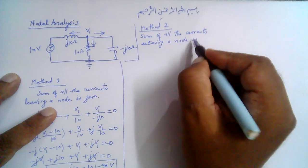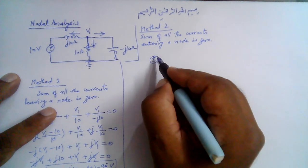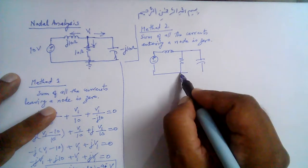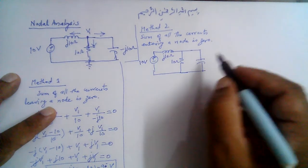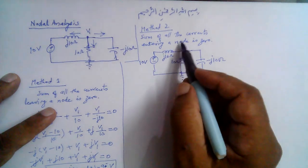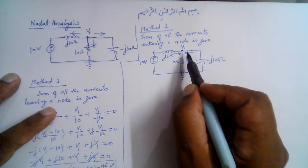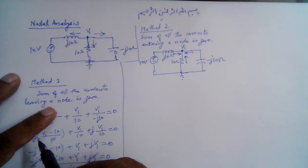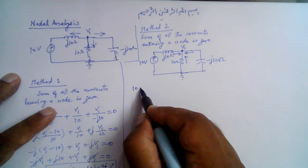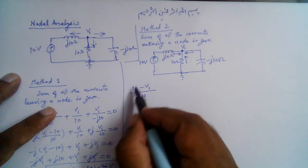Let me redraw the circuit: 10 ohms, j10 ohms, 10 volts, −j10 ohms, with node voltage V1 and the reference node. Now we suppose that all currents are entering this node. For the current entering from the source branch, the higher potential is 10V, so the current is (10 − V1) / j10.